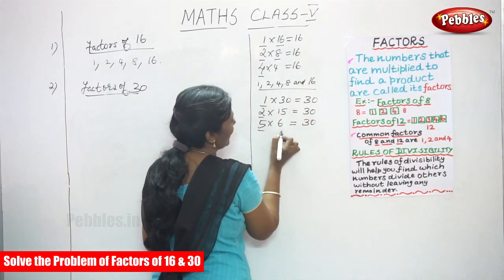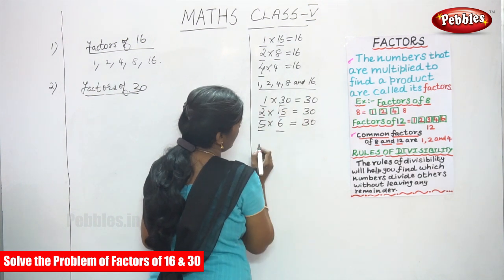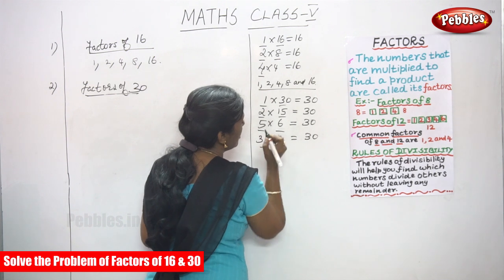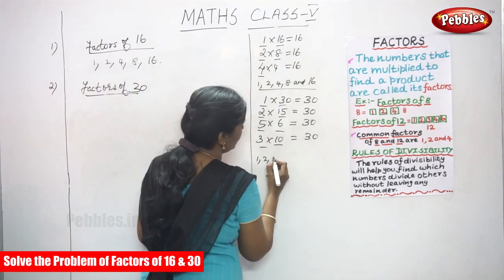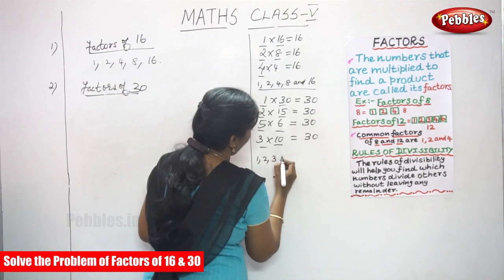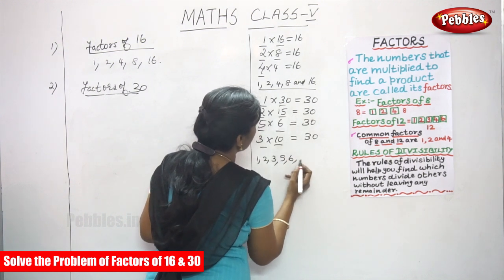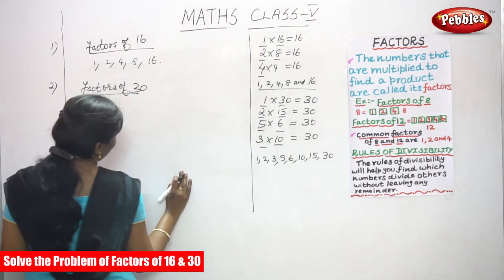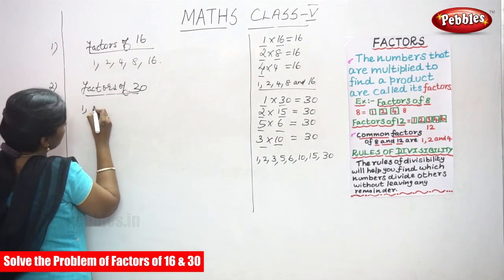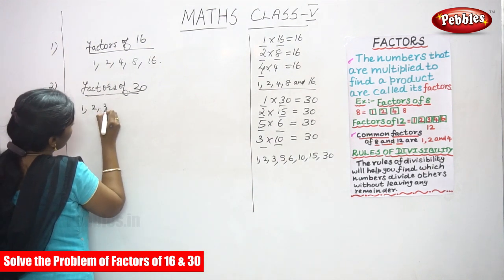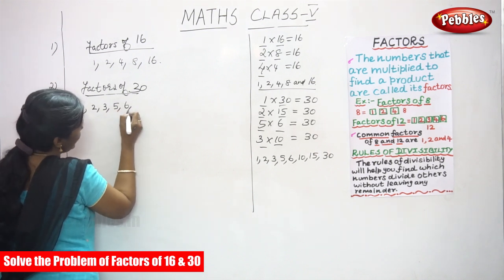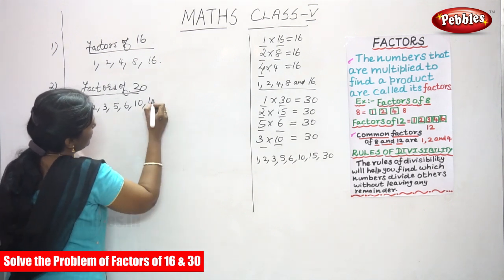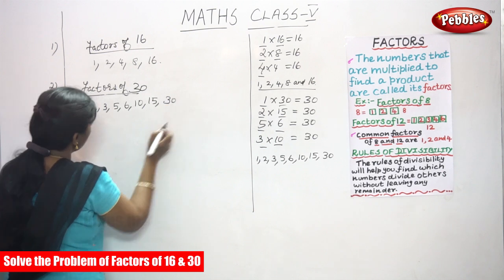We can also write 3 into 10 is equal to 30. So the factors of 30 are 1, 2, 3, 5, 6, 10, 15, and 30. These are all the factors of 30.